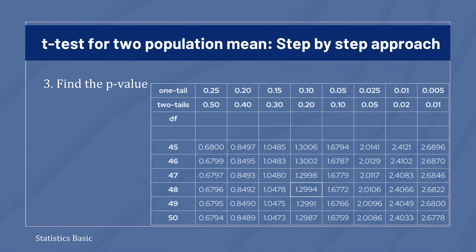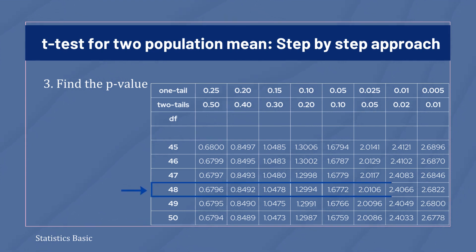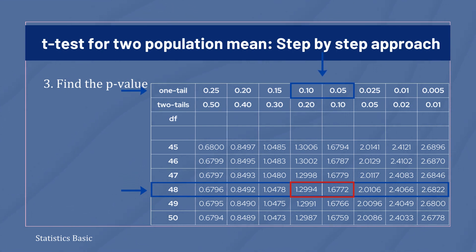In the t-distribution table, first select a row for the degrees of freedom value of 48. Then select the cells within which the absolute value of the t-statistic — that is 1.53 — lies. Now select the column values associated with these two cells, which provides the range of the p-value. The p-value lies between 0.05 and 0.10.